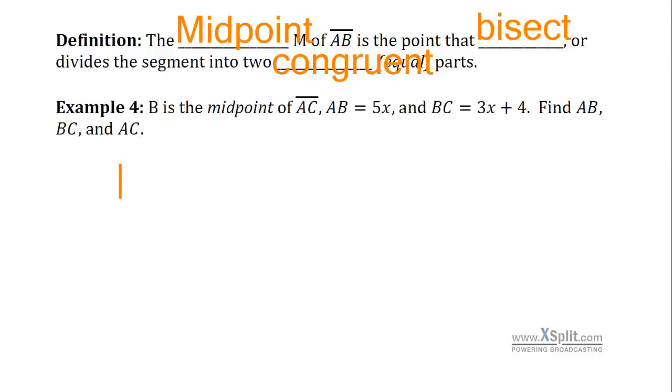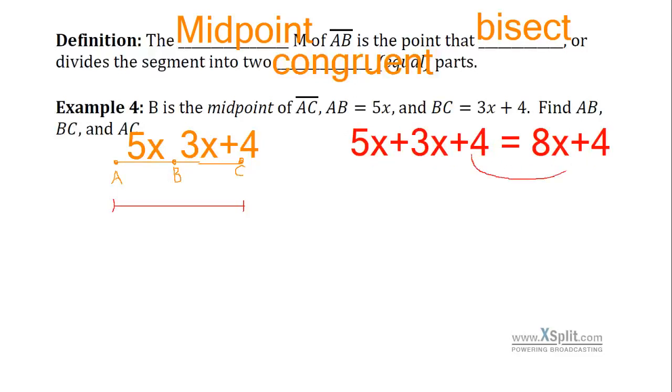So if we're given a problem here, B is the midpoint of AC. I'm going to draw that situation here. I have line segment AC. And B is the midpoint. I'm going to draw B exactly in the middle. B is the midpoint of AC. AB is 5X. And BC is 3X plus 4. Well, unlike the last problem, we don't have an entire distance. Yeah, I suppose we could say 5X plus 3X plus 4 is 8X plus 4. We're going to run into some issues. Let me show you here.